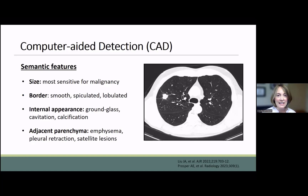Starting in the 1980s, one of the earliest applications of AI was computer-aided detection of lung nodules on chest imaging. These software programs rely on semantic features, which are the qualitative morphologic features we commonly use to identify a malignant nodule — things like size, border, internal appearance, and surrounding lung parenchyma.